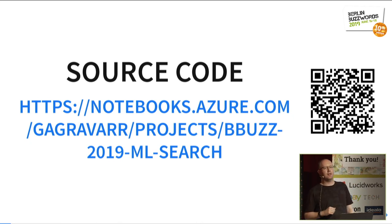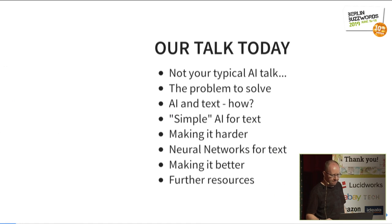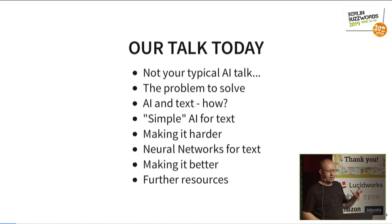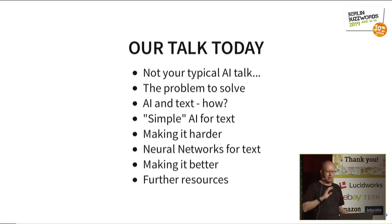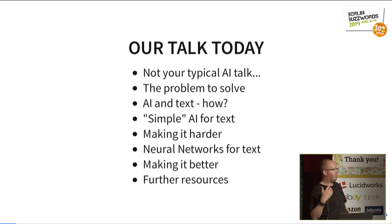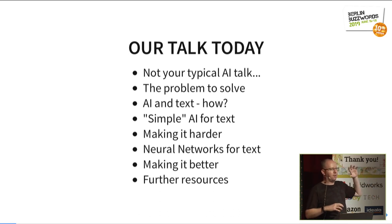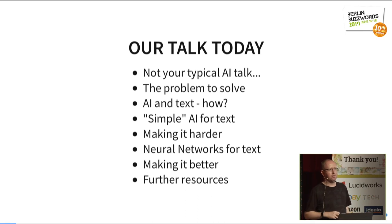There's a QR code, hopefully going to work for everyone. So it's not going to be your typical AI talk. I'm going to explain a little bit about the kind of problem that I've got to solve, then we're going to look at how we can do AI for text, how we can make it better, and then at the very end I'm going to give a whole bunch of resources so that if you're interested in this sort of thing, you'll have some pointers on how to go off and learn some more.